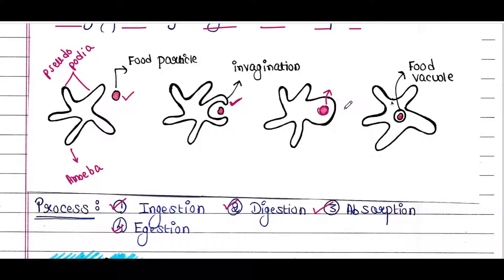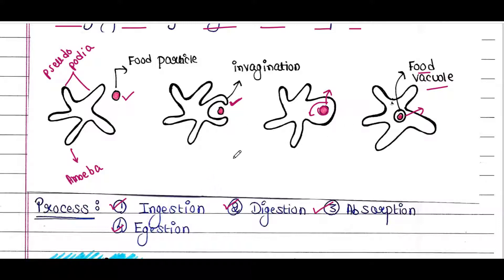The invagination will be pinched off and it will surround the food particle, becoming a food vacuole. Now the food particle is inside the food vacuole. Up to this process we can say this is the ingestion process, because food has been ingested.